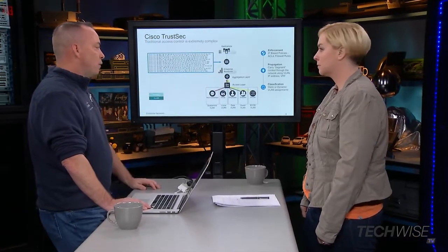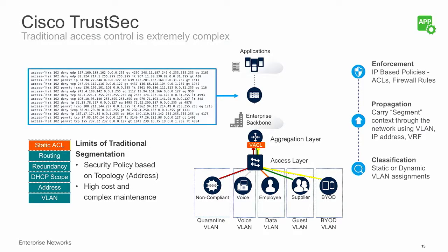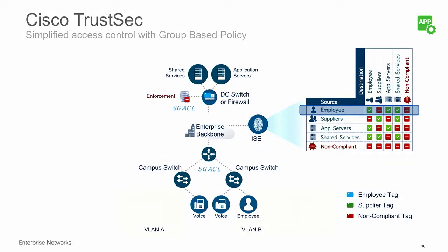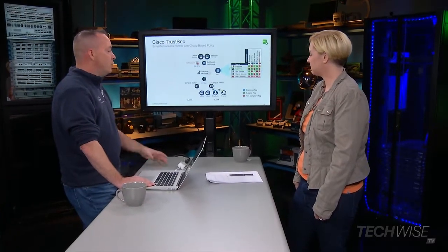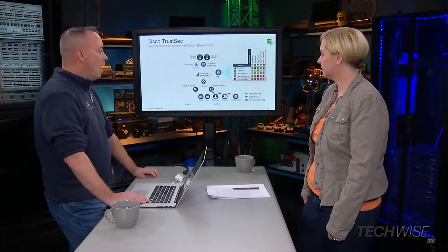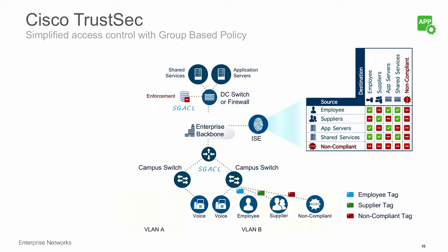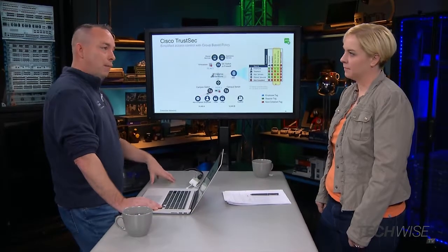We've been doing address-based access lists for 20, 30 years — they're complex, hard to read, and don't change anything. The key goal is to give something other than an address to make the identity. What they came up with was a group-based tag. When a user comes in, they get associated with this tag, and whenever I build an access list, I only have to use the tag — I don't actually care what its IP address is anymore. We've had TrustSec for several years, but it was carried in a specific part of the Layer 2 header, which made it complicated to deploy. One of the beautiful things about using VXLAN as an overlay is I can finally realize the advantages of TrustSec.